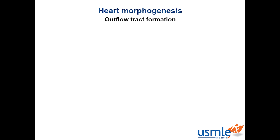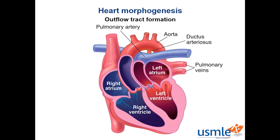There are a few things that can go wrong. First, you can have failure of the septum to properly rotate, resulting in transposition. Here, the aorta is connected to the right ventricle and the pulmonary artery root is connected to the left ventricle, resulting in two closed-loop circulations. An infant with completely separate pulmonary and systemic circulations would need something allowing mixing of blood — such as an ASD, a VSD, or a PFO — so that oxygenated blood can mix.